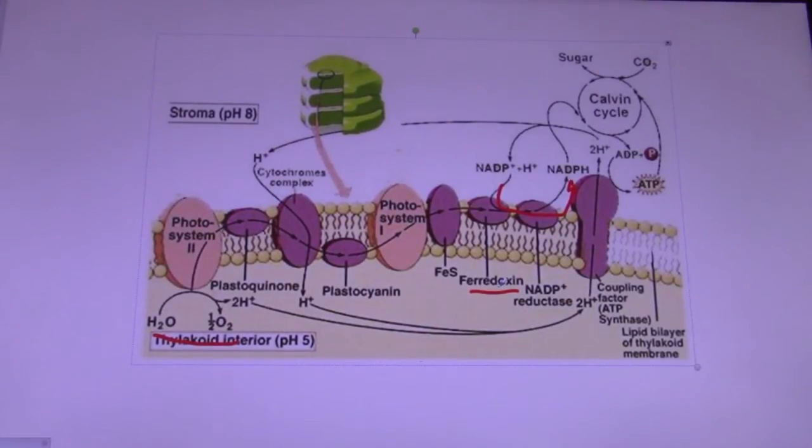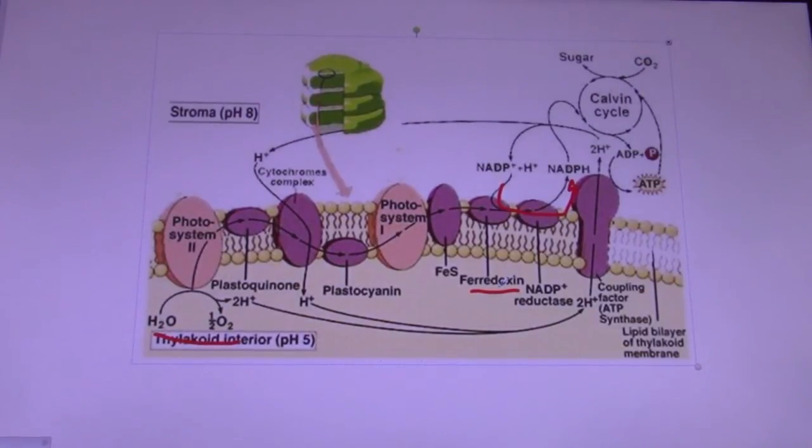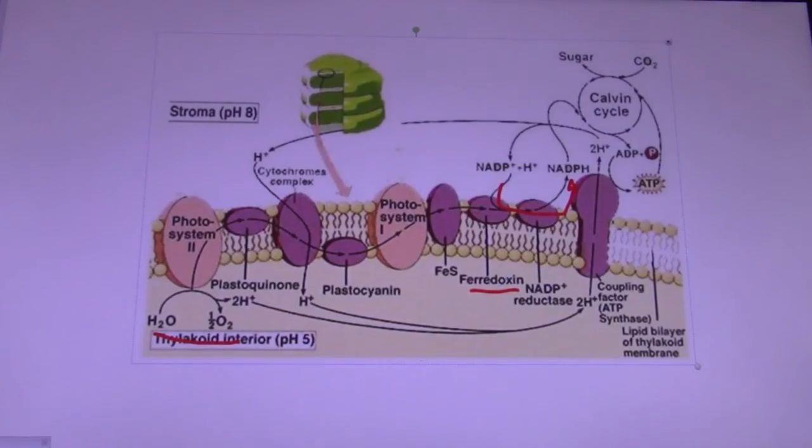The ability of ferrodoxin to carry electrons serves an important role in the process of photosynthesis. Electron transport chains are used to generate a hydrogen ion gradient, which generates a proton motive force. This proton motive force is used to produce ATP.